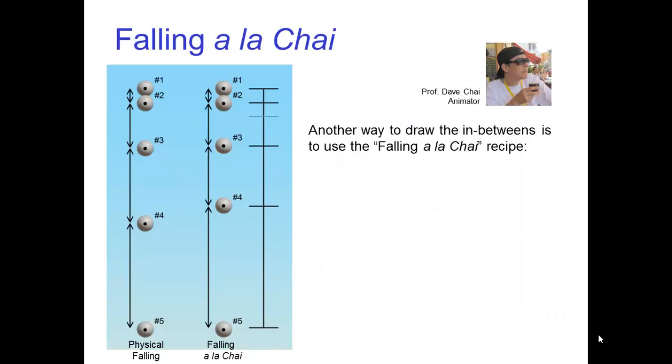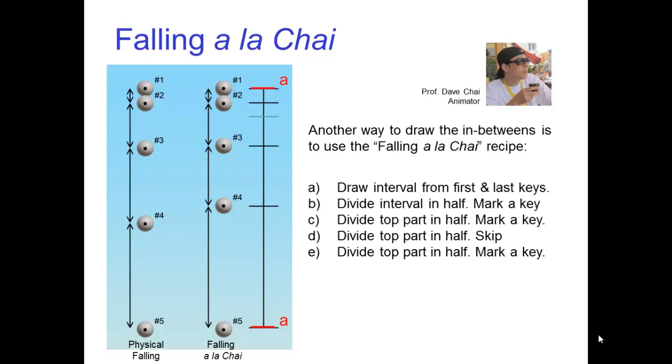Another way to draw the in-betweens is to use the falling a la chai recipe. First, draw the interval from the first and last keys. Divide the interval in half and mark a key. Then divide the top part in half and mark another key. Divide the top part of that in half and skip. That is, no key here. Finally, divide the top part of that in half and mark one more key. This gives you the breakdown drawings plus the two in-betweens.